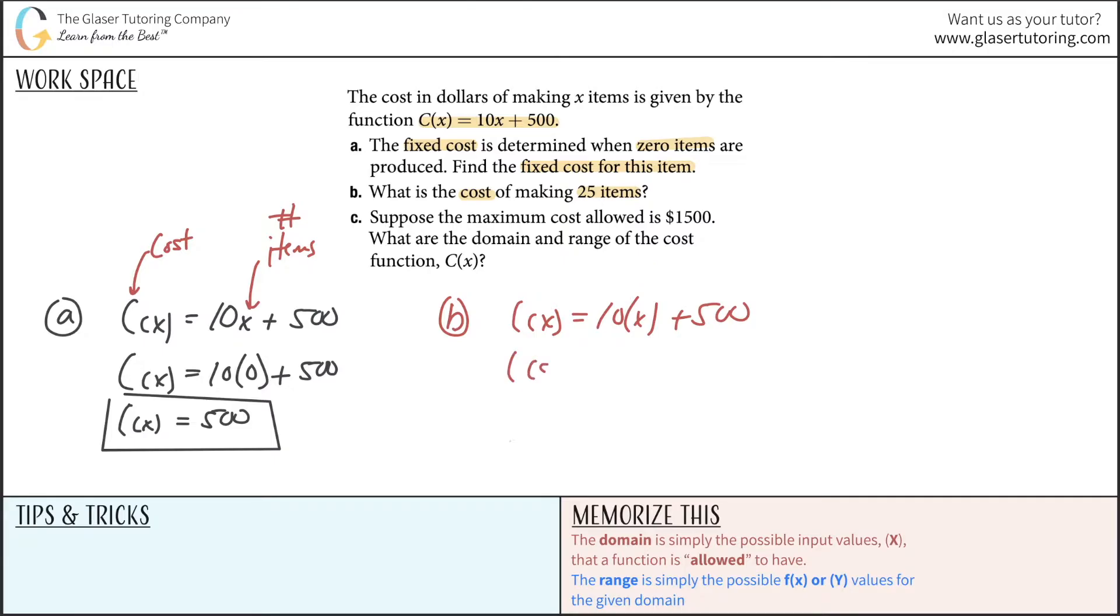The cost of making 25 pizzas is going to be 10 times 25 plus 500. So C(x) is equal to 250 plus 500, which equals 750 dollars. As you can see, if you only produced 25 pizzas in a certain amount of time, the total cost would be your rent plus the cost of the pizzas of 250 dollars to give you a total cost of 750.